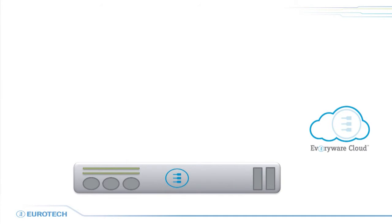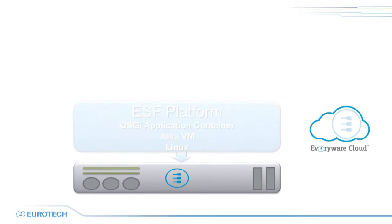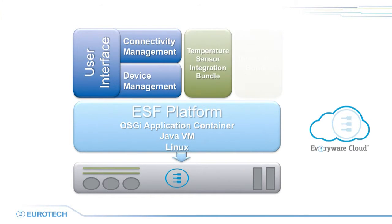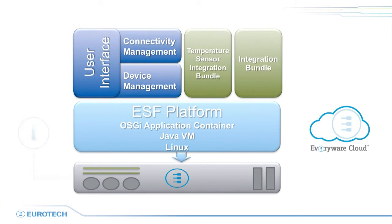ESF provides a platform on which new sensors and actuators can easily be integrated into the gateway device. It deals with all of the essential gateway applications such as device management and connectivity management, leaving the user to deal just with communications to the sensor by developing a new integration bundle.